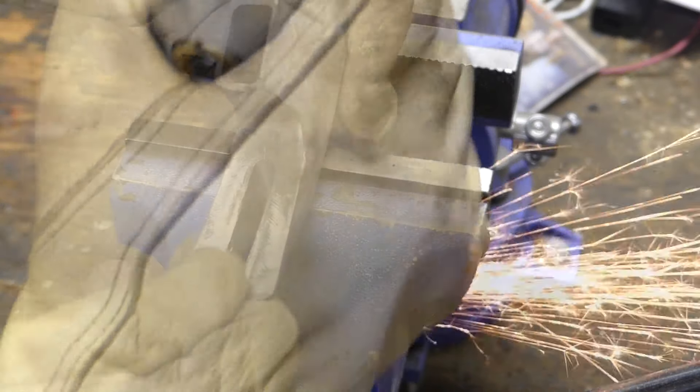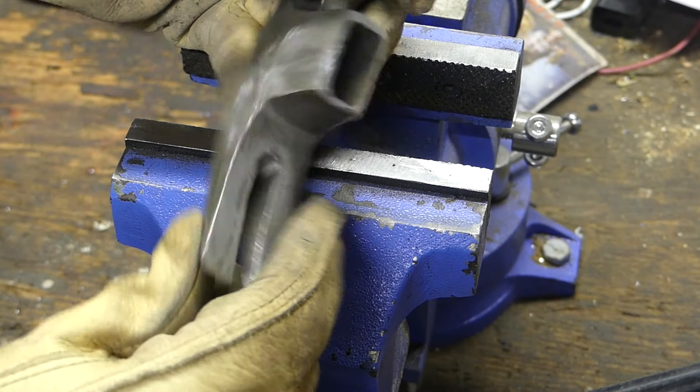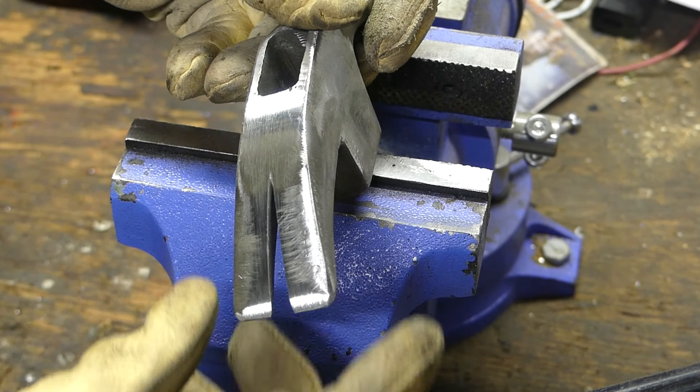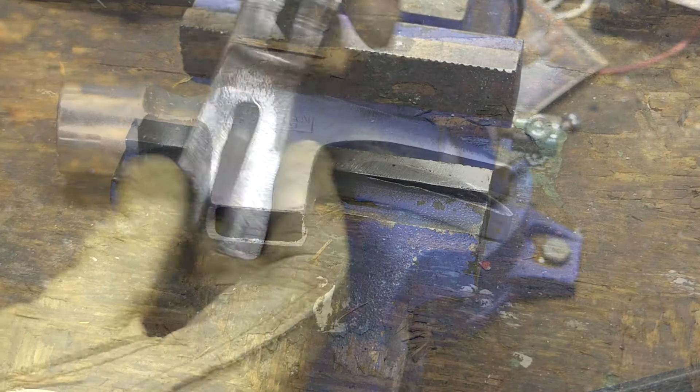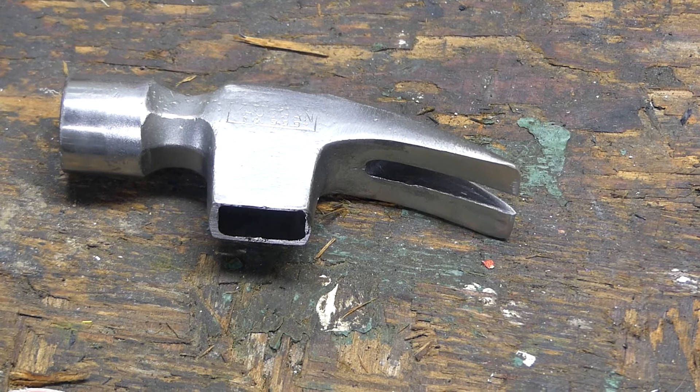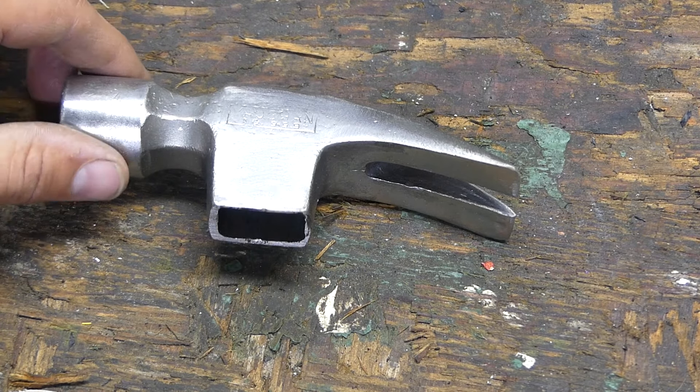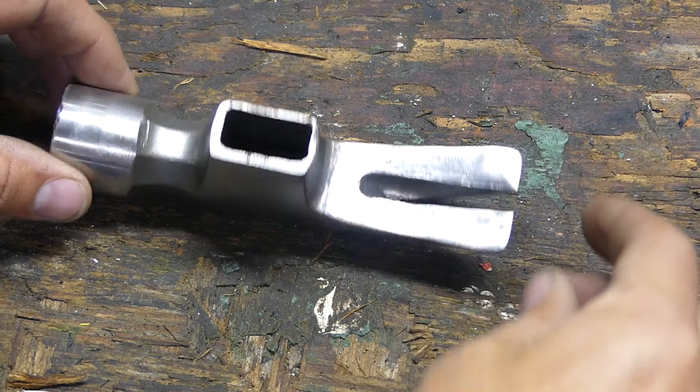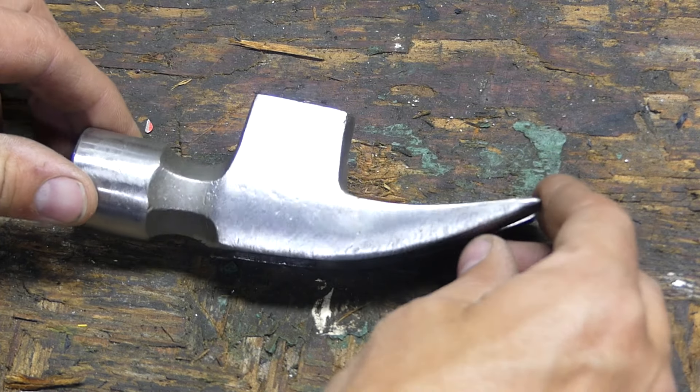You could see that from using the different grits and different angles, it's got a lot of scratch marks in it. I put black in my blast cabinet and blended the texture in, and I'm really happy with the way it blended it. It came out pretty well.